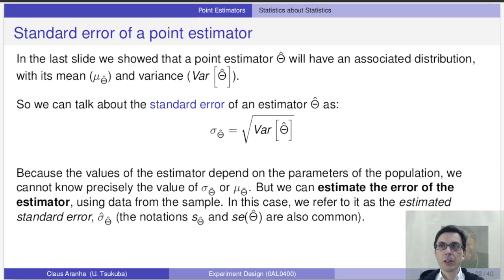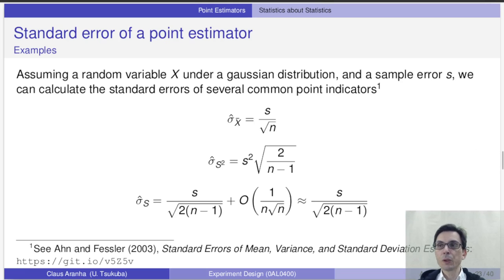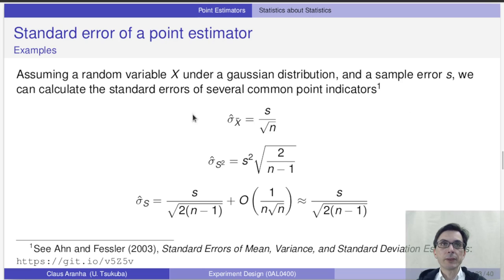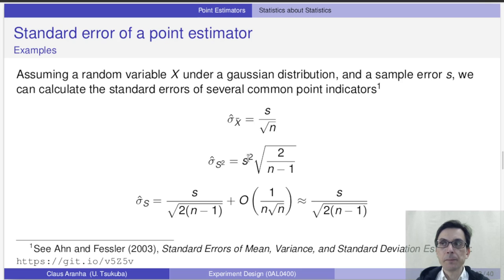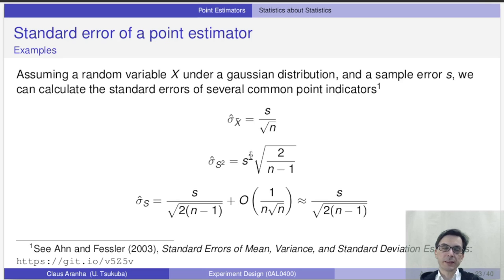To calculate the standard error of the estimator, we use the sample mean as an error. This means that the standard error of the estimator is itself an estimate — this recursion can go very deep if you let it. The important thing is that we want to know the standard error of our estimators to evaluate how useful they are. Here are some formulas for the standard error of the mean, the standard error of the variance, and the standard error of the standard deviation. Note that in these formulas, S means the error calculated from the sample — we calculate the average of the sample and subtract it from the value of each observation. This is usually used as an estimate for the variance or the standard error of the entire population.